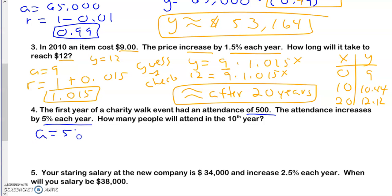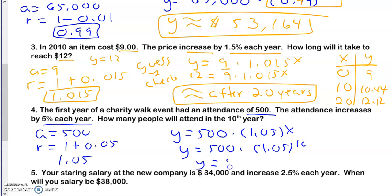So A, again, is 500. R is, it's increasing, so it's 1 plus 0.05 or 1.05. So Y equals 500 times 1.05 to the X. And I am going to put in my 10 for X. So I'm going to get Y equals 814 people.